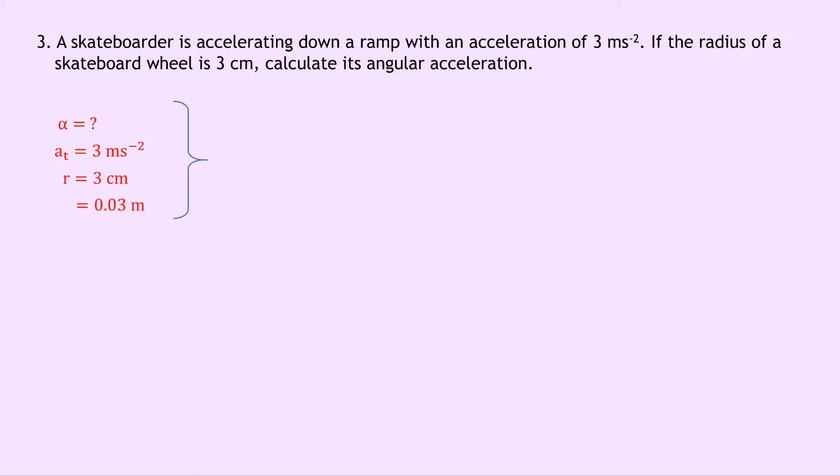So writing down our equation now relating angular and tangential acceleration, we have a_t equals r alpha, and rearranging for alpha, we have alpha equals a_t over r. Substituting in the numbers, we have 3 divided by 0.03, which gives us 100 radians per second squared.